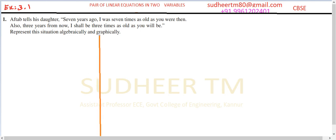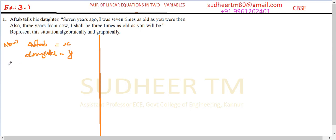Now, Aftab is telling his daughter. Let's set up the variables. We will assume Aftab's age is equal to X and the daughter's age is equal to Y. He is telling his daughter about seven years ago, so that is case one.